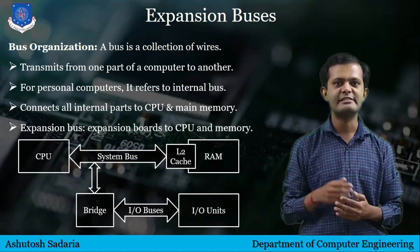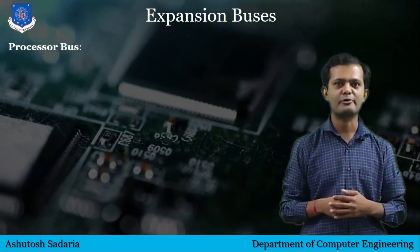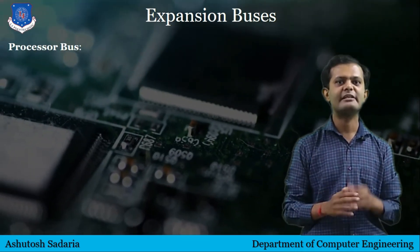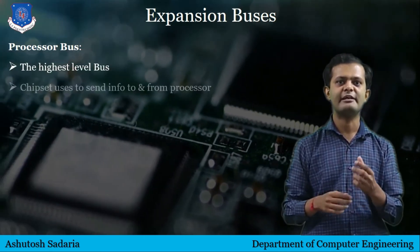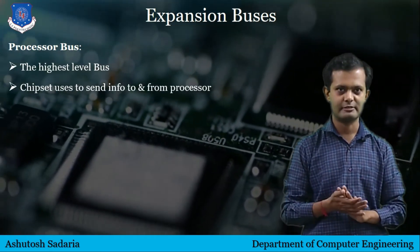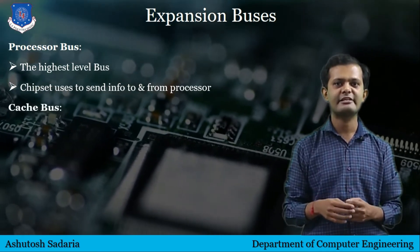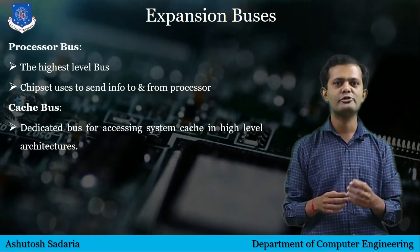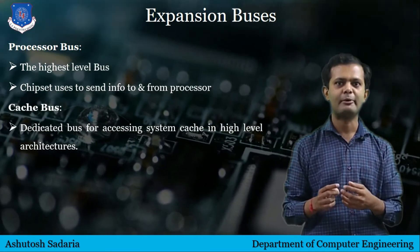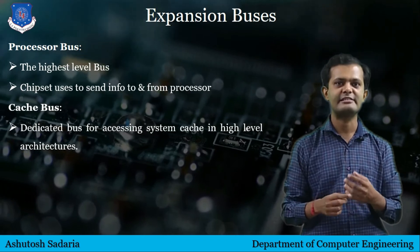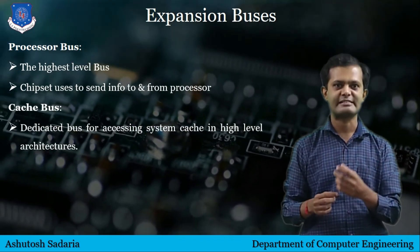Most modern PCs have at least four types of buses. The first is the processor bus, which is the highest-level bus that the chipset uses to send information to and from the processor. The next is the cache bus. Higher-level architectures such as those used by the Pentium Pro, Pentium 2, and higher processors employ a dedicated bus for accessing the system cache, sometimes called the backside bus.